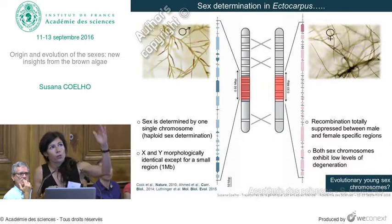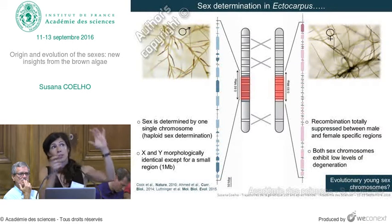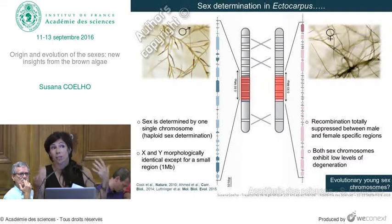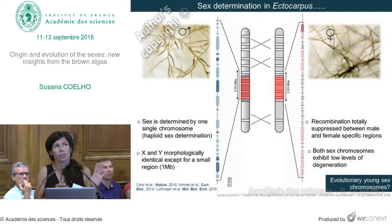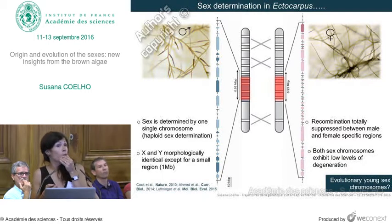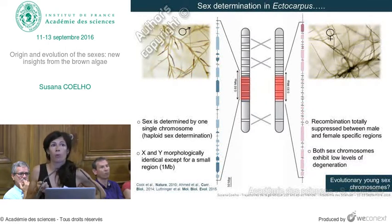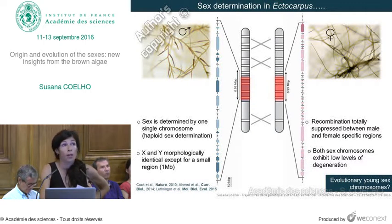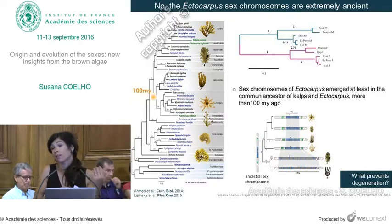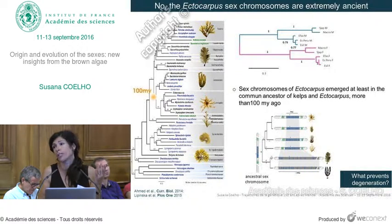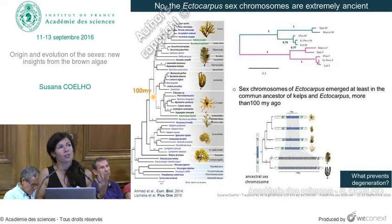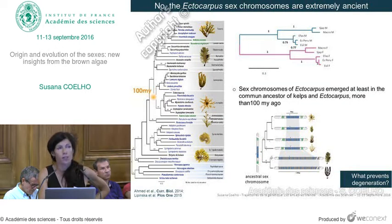What is also striking is a symmetry: male and female look relatively the same; the size of the non-recombining region is the same, and the degree of degeneration is the same — and very small, with not a lot of degeneration. Following the model of sex chromosome evolution, this would mean these chromosomes are probably young. But we could date the emergence of these sex chromosomes and showed they are extremely ancient — more than 100 million years. So how come such an old system is not degenerating? What is preventing degeneration?